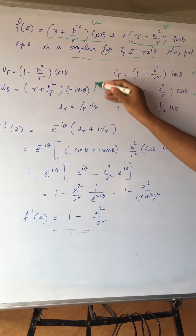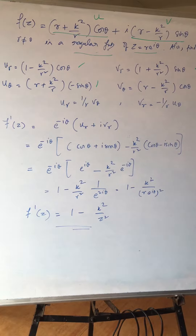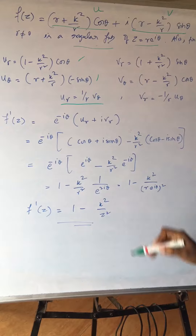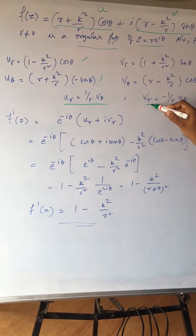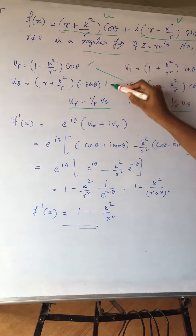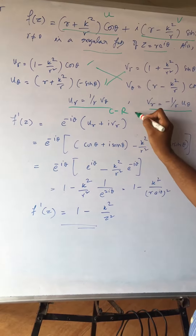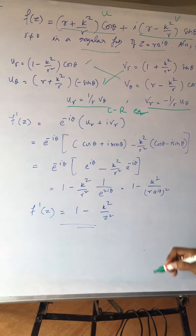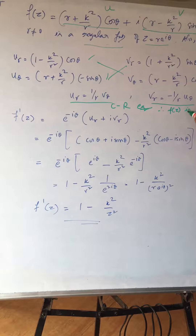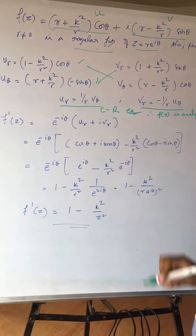Now let us check whether it satisfies the Cauchy-Riemann equations in polar form. To satisfy them, we need u_r = (1/r)·v_θ and v_r = -(1/r)·u_θ. These conditions are satisfied, so this satisfies the Cauchy-Riemann equations. Therefore, the function f(z) is analytic — we have shown that it is analytic.